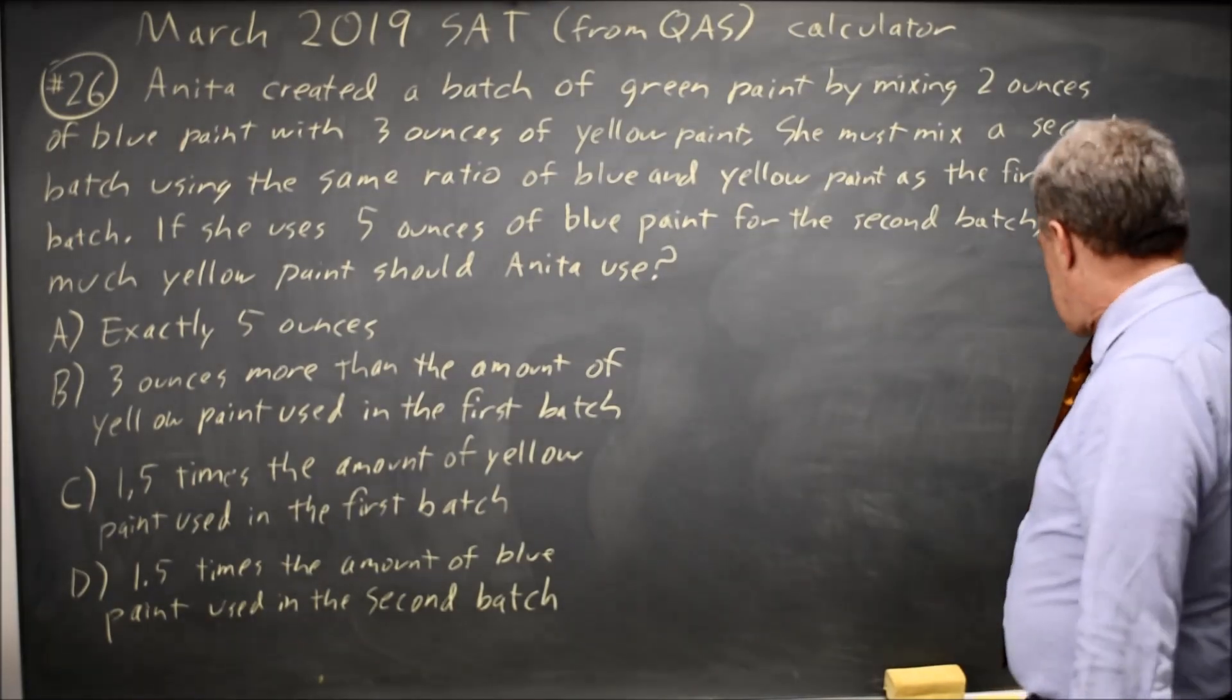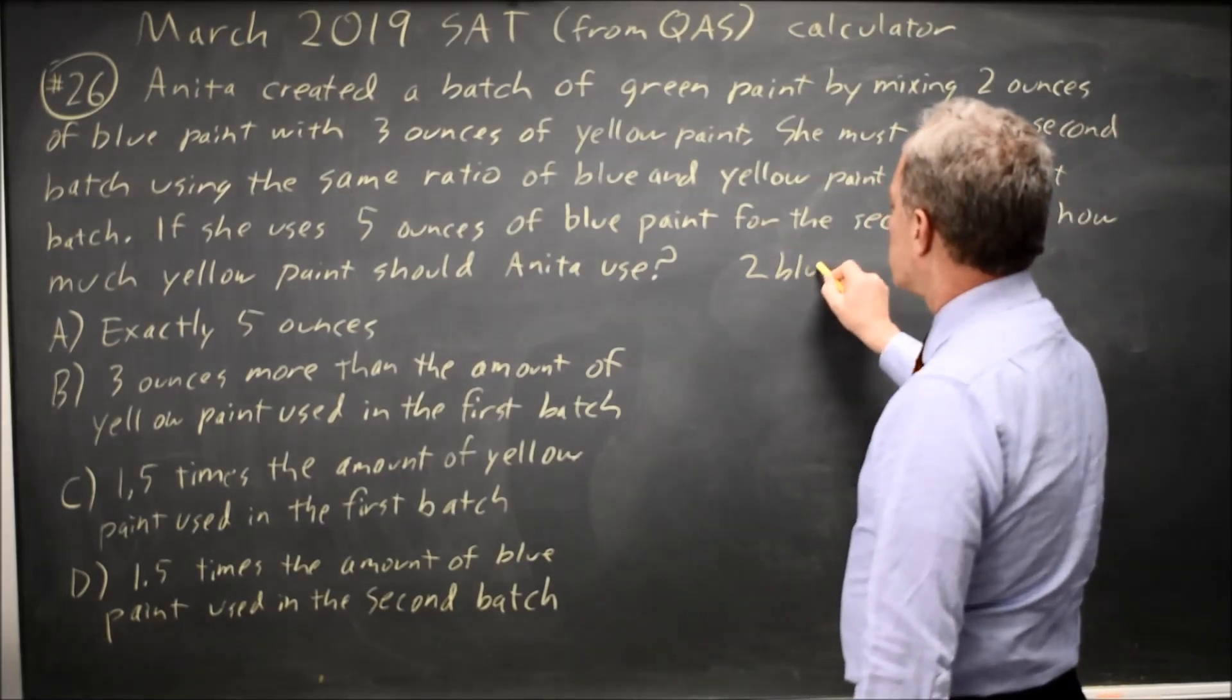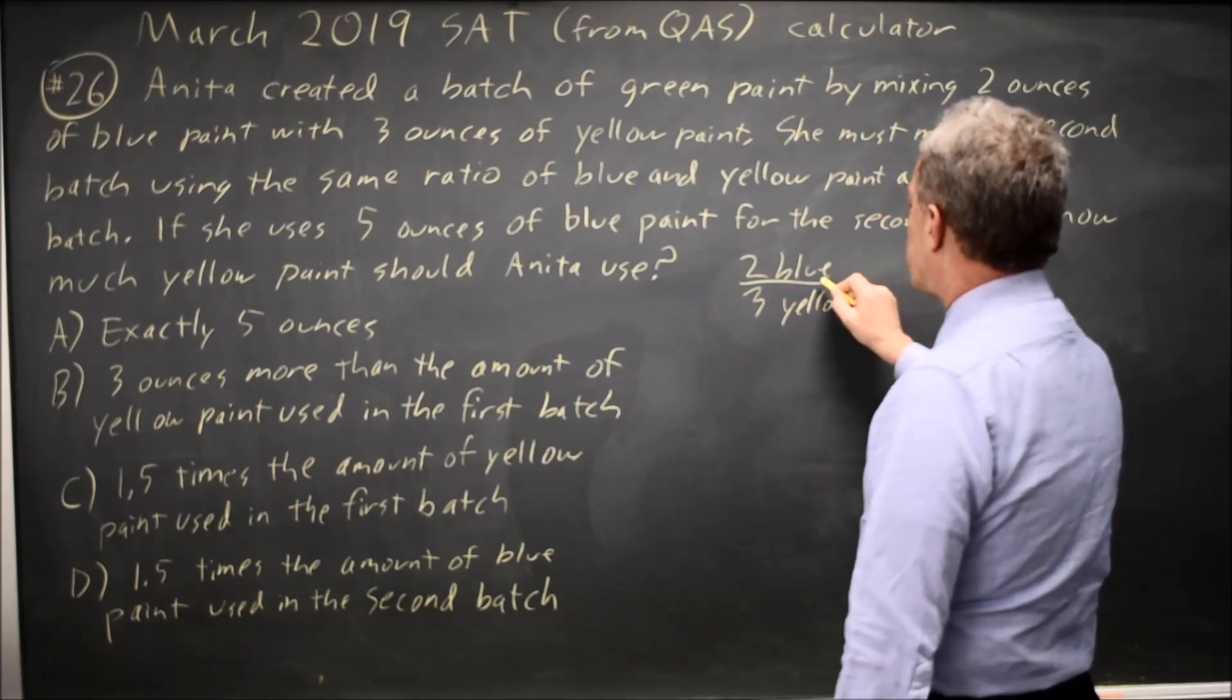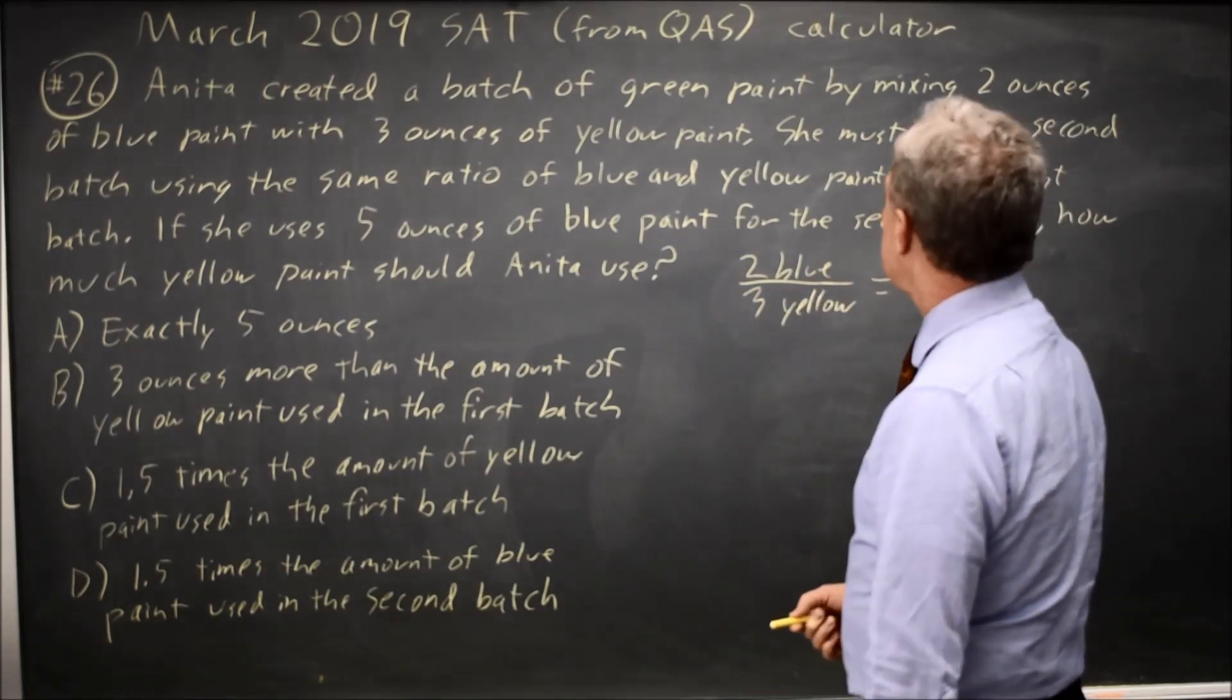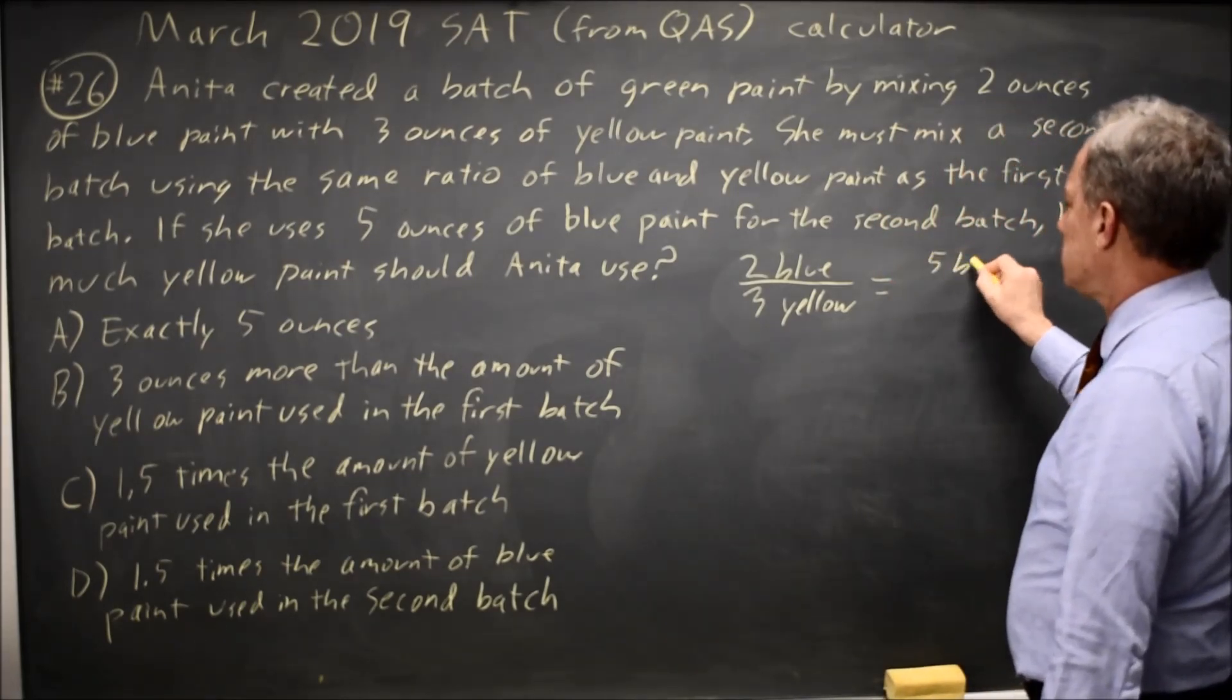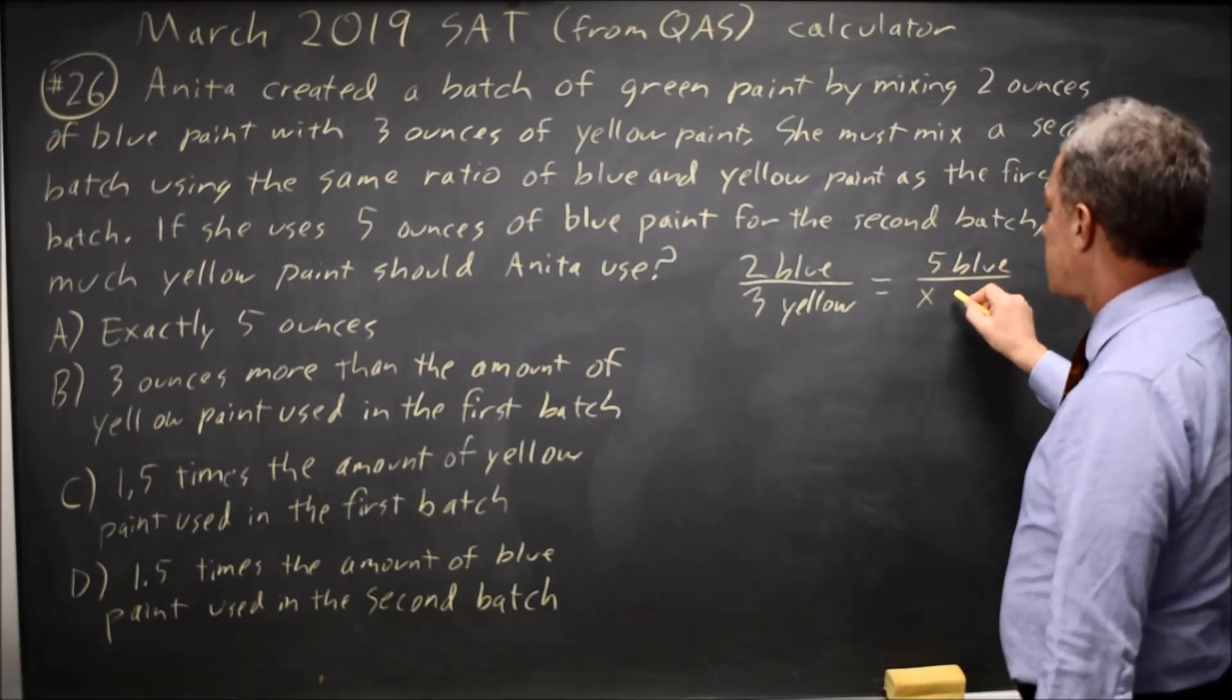And the question is, if Anita uses 2 ounces of blue to 3 ounces of yellow in her first batch and she wants the same ratio in the second batch with 5 ounces of blue, how much yellow? And I'm going to call that amount X.